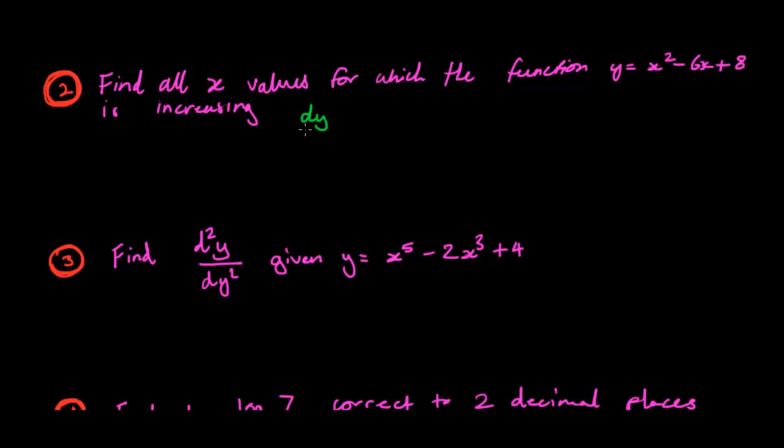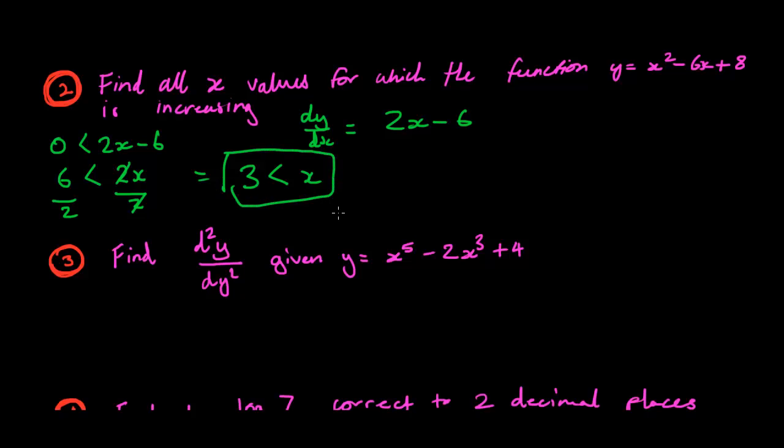So let's just do dy/dx equals 2x - 6. So then we know that this function has to be bigger than 0 for it to be increasing. So let's just do that here on the side. We go 0 is smaller than 2x - 6. So then the 6 can move on to the other side. 6 is smaller than 2x. Divide everything by 2. And we end up getting 3 is smaller than x. So for everything that x is bigger than 3, it is increasing. This should be your answer. And the answer should be d.